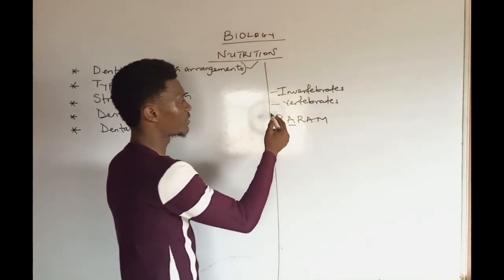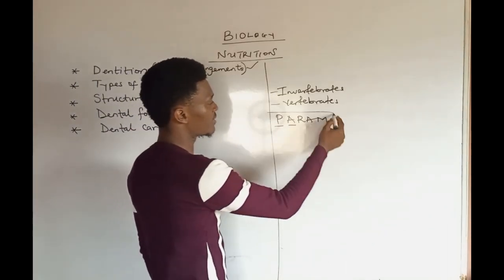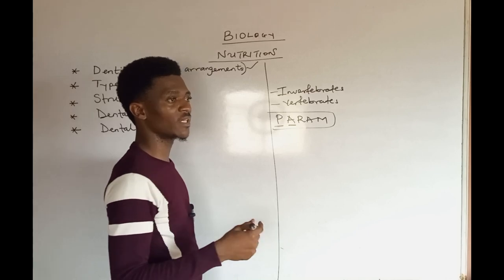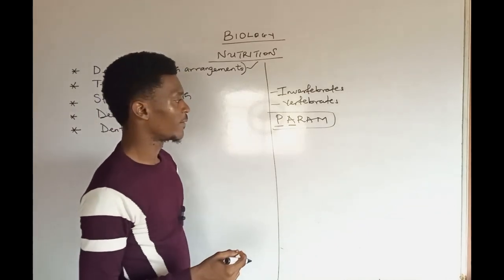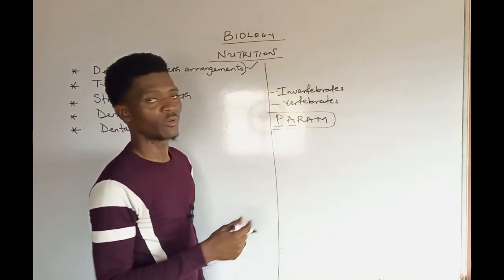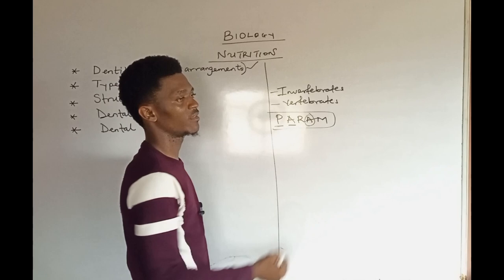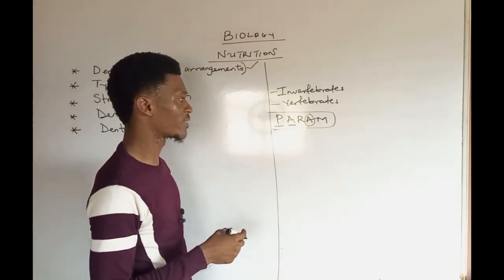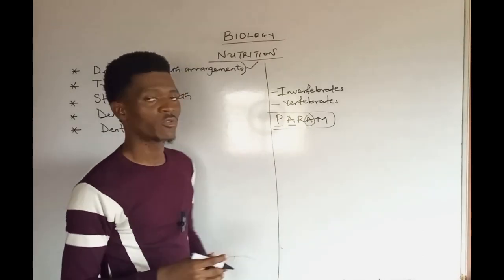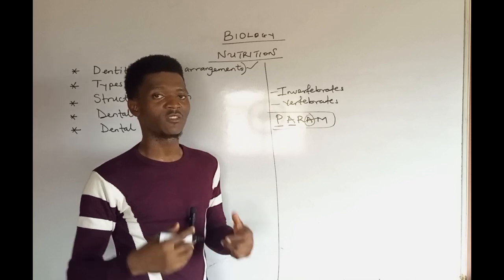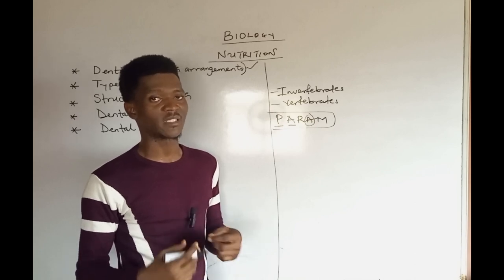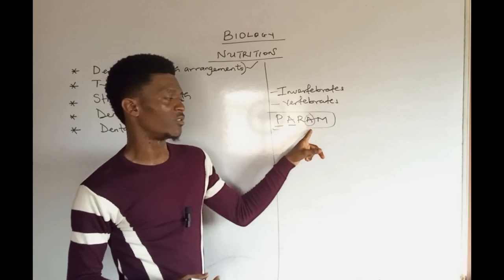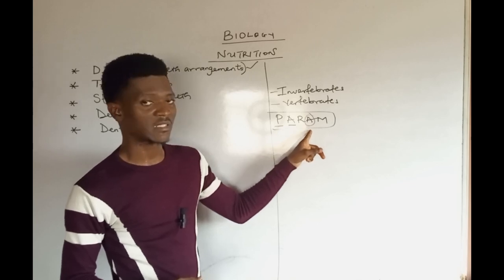Looking at these organisms under the vertebrates, vertebrates are generally known to be the ones that possess teeth, with the exception of aves. So if you come across a question asking which group of vertebrates are generally known without teeth, the answer is aves — the birds. They do not have teeth.